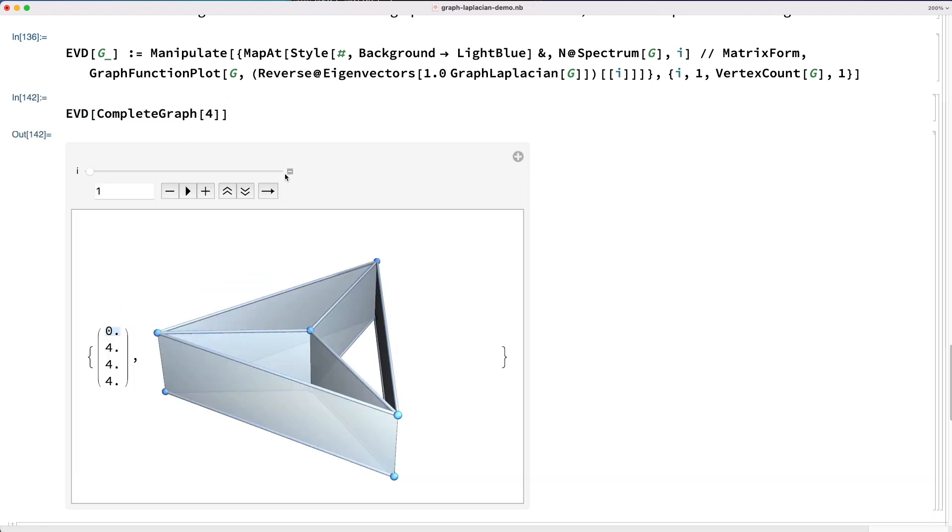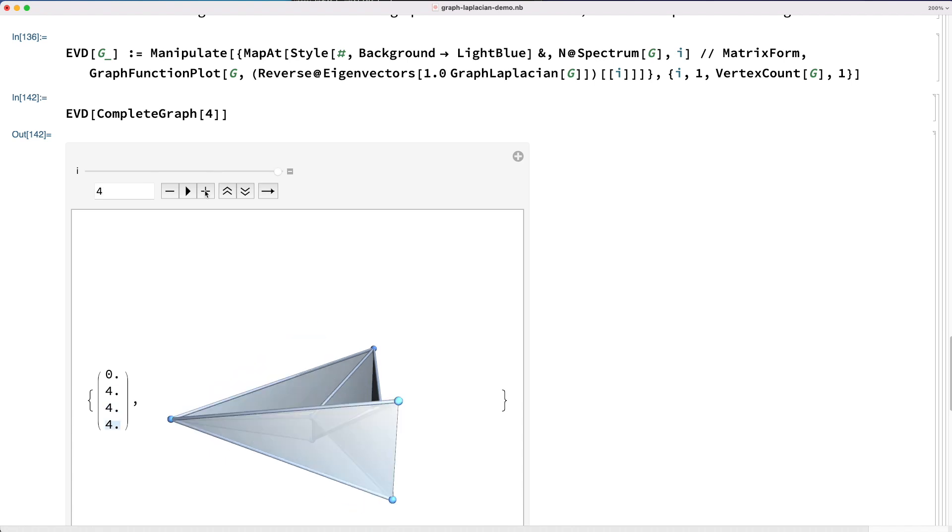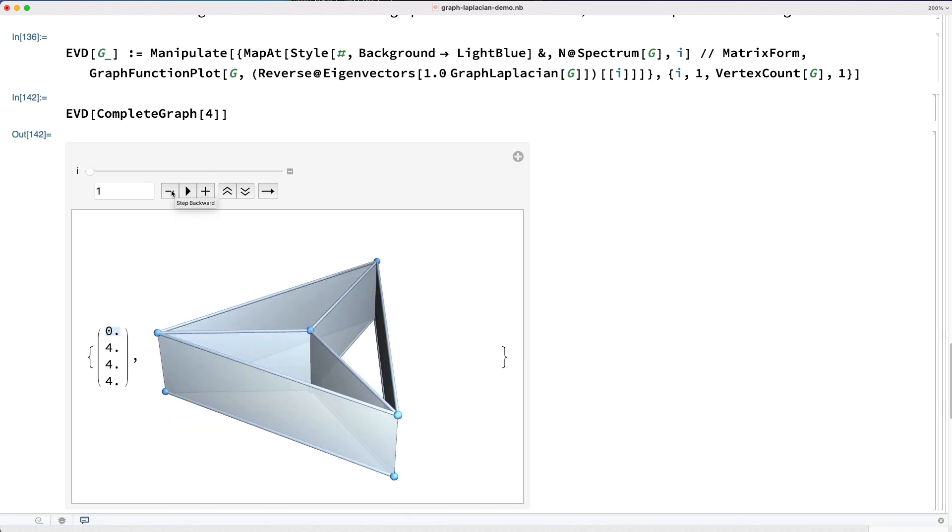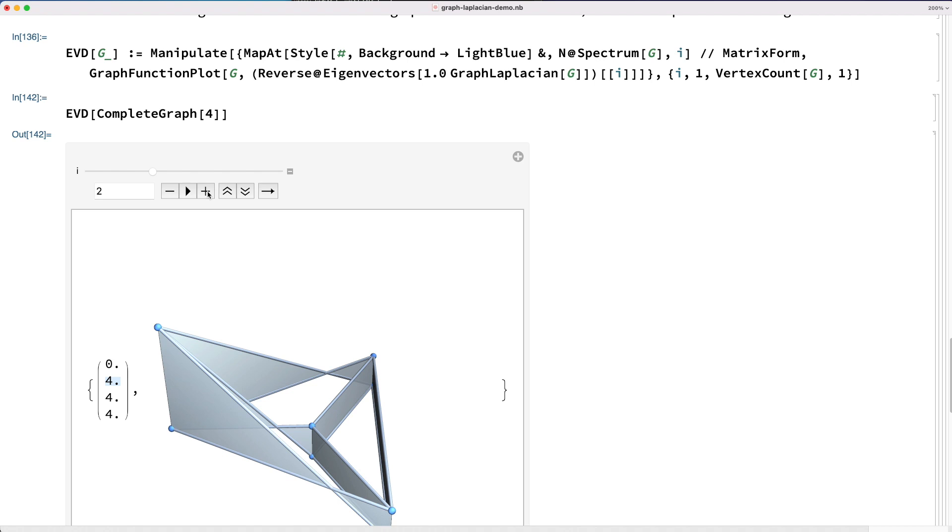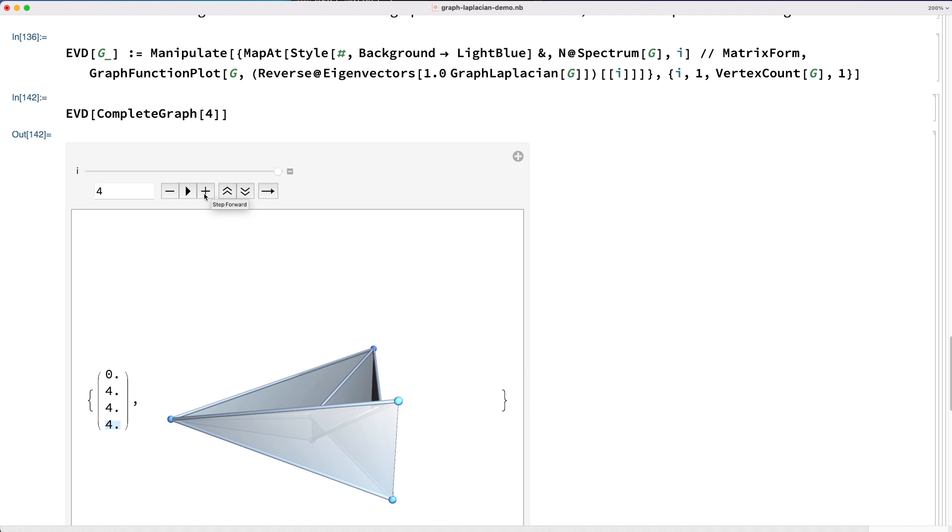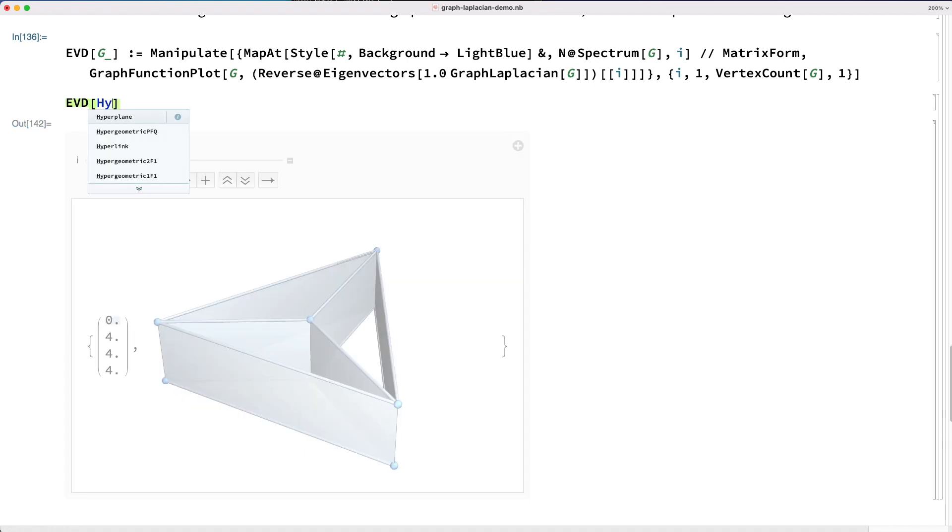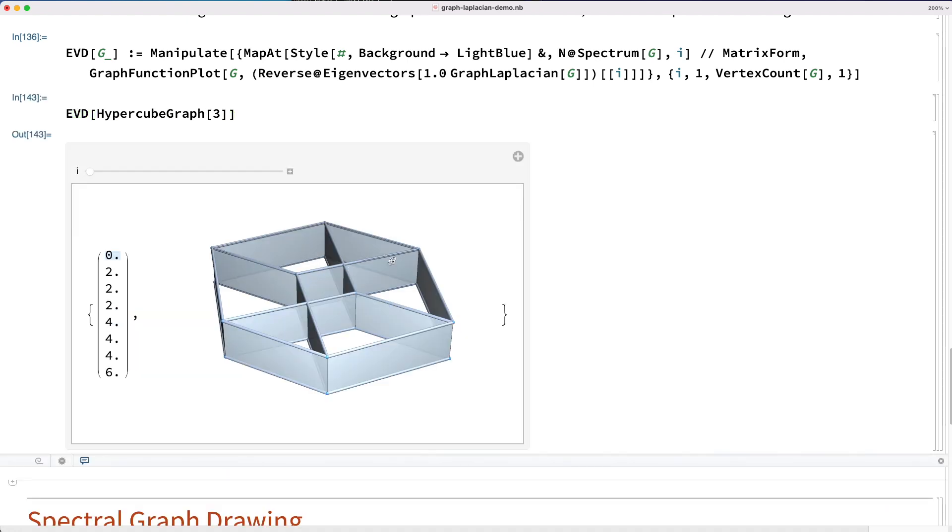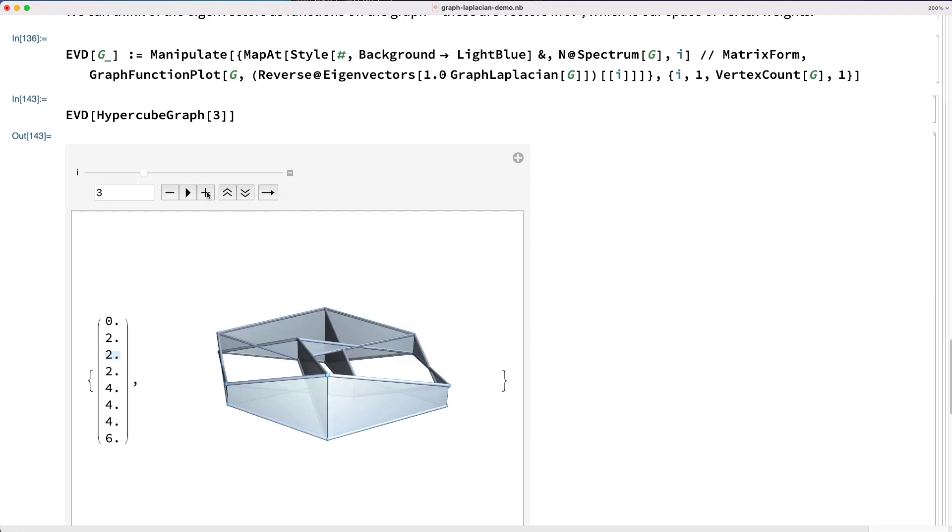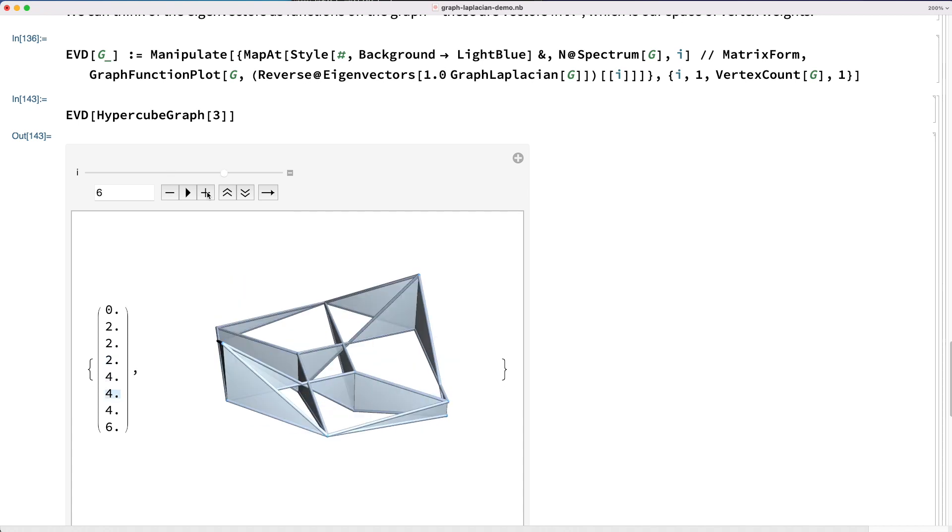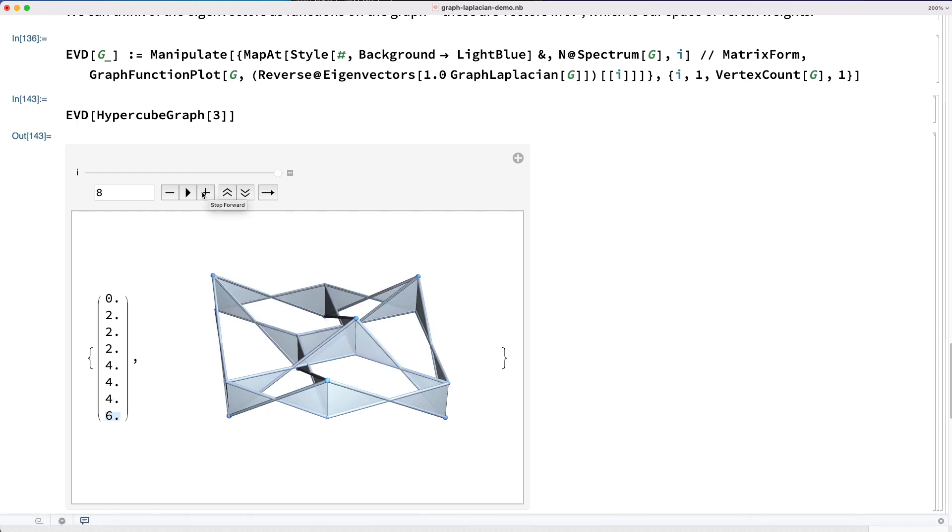Now we can look again at the complete graph with four vertices, but we see that the four different eigenvectors are the constant, which everybody seems to have, and then three where the relationship between them is not completely clear. So let's try one more graph. It's called the hypercube graph in three dimensions. This is the skeleton of an actual cube. It's two squares here and here connected by four edges like this, and we can see that there are some kind of beautiful symmetries in the eigenvectors, but it's not really clear what they mean.